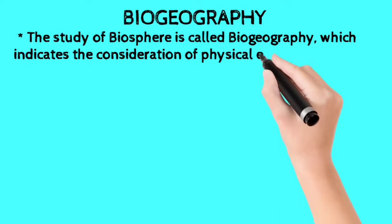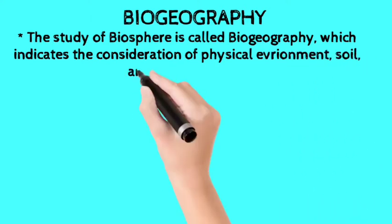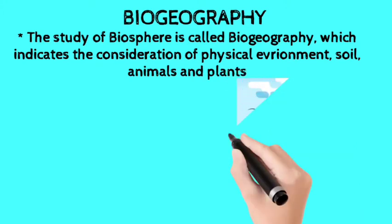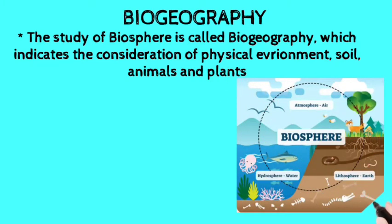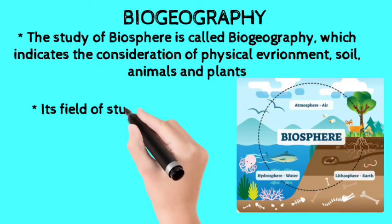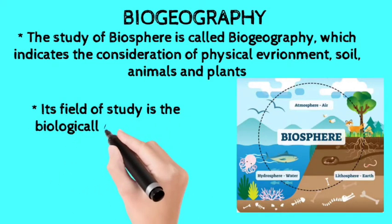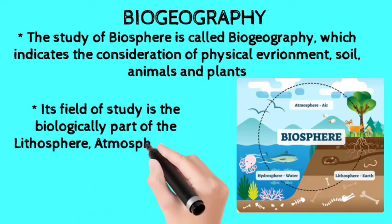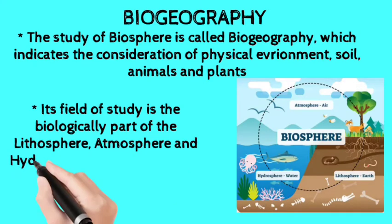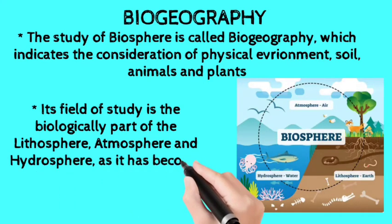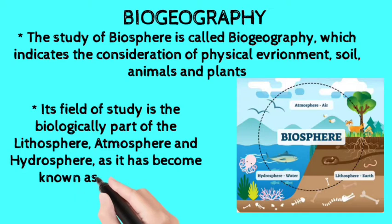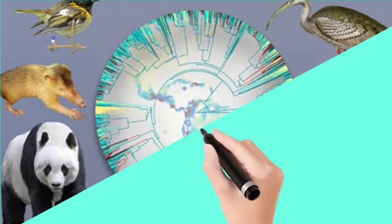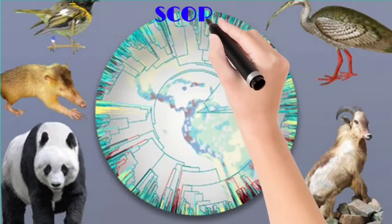This diagram shows the biosphere and its field of study. It indicates the consideration of the physical environment, soil, animals, and plants. The biosphere covers the biologically active part of the lithosphere, atmosphere, and hydrosphere.